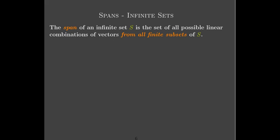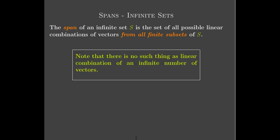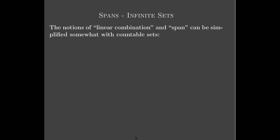Once you have an idea of what a linear combination is, you can talk about span, because the span is the set of all possible linear combinations. Remember, we defined a linear combination in terms of a finite subset. So span means we take all possible linear combinations from all finite subsets of S. And remember, there's no such thing as a linear combination of an infinite number of vectors — it's simply not defined.